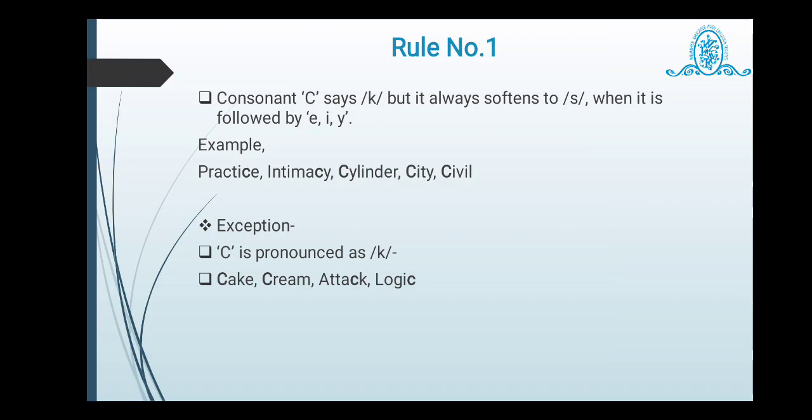So we are going to discuss about different rules of spelling. Rule number one tells us that consonant C says K but it always softens to S when it is followed by E, I, or Y. The letters which have been written here into a slanting bar, it belongs to pronunciation. So sometimes the consonant C is pronounced as a K sound, but sometimes it is softening to the S sound if any word in which the C is followed by E, I, or Y, then it can be pronounced as S. So example is given here: practice. So C is here bolded, it is highlighted because it is followed by E. Intimacy, why C? Because it is followed by Y. Cylinder, why C? Because it is again followed by Y. City, why C? Because it is followed by I. And civil, it is followed by again I.